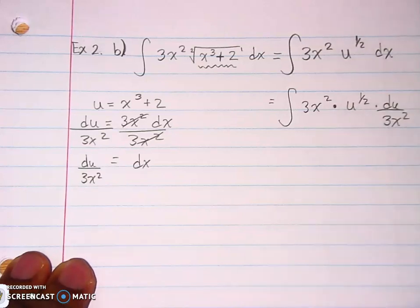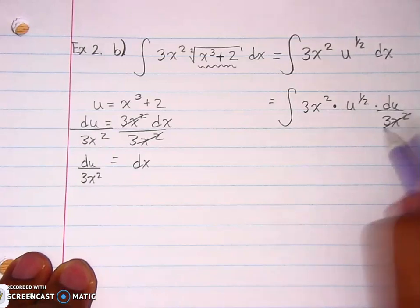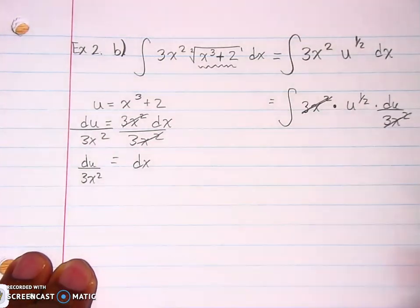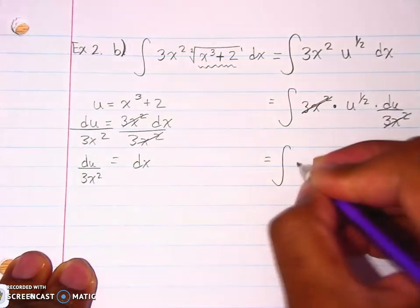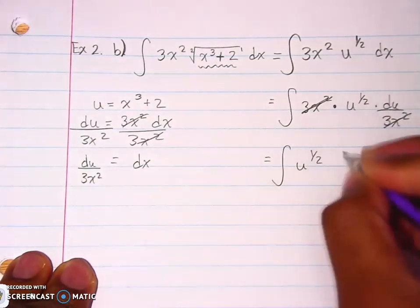And in this case, you can see that we actually did not do the wrong type of integration because 3x squared cancels out with 3x squared, and so we have the integral of U to the 1 half power DU.